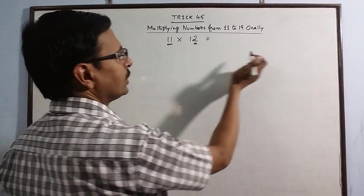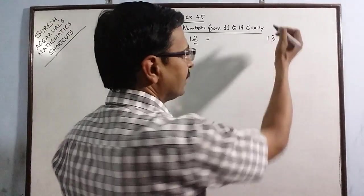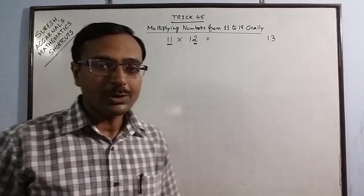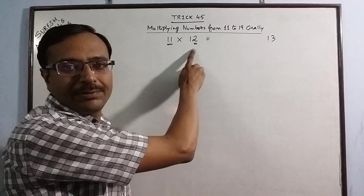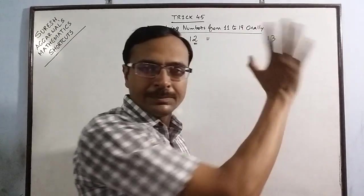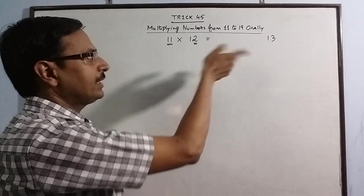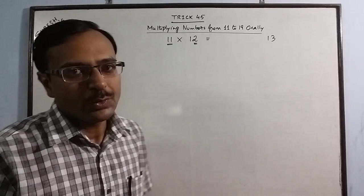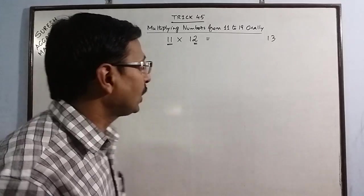11 plus 2 is 13. You can do it the other way around also. You can take 12 and add the unit digit of this. You will get the same sum. 11 plus 2 is 13 and 12 plus 1 is 13. You have to take it either way.